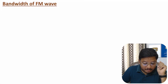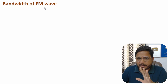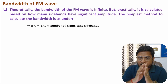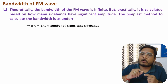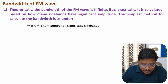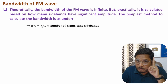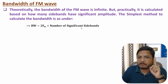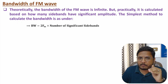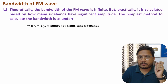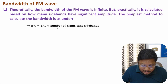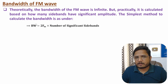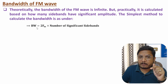Now let me discuss the bandwidth of an FM signal. Ideally, the bandwidth is infinite because there can be an infinite number of sidebands. Practically, the bandwidth depends on the number of significant sidebands, which in turn depend on modulation index — as modulation index increases, sidebands increase. One practical method is to calculate bandwidth as 2fm × (number of significant sidebands). For example, at modulation index 0.25, there is only one sideband, giving bandwidth of 2fm.